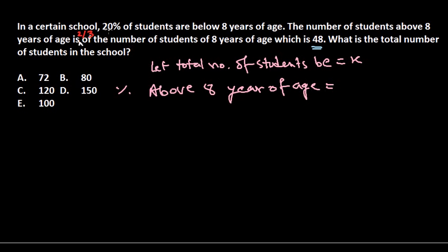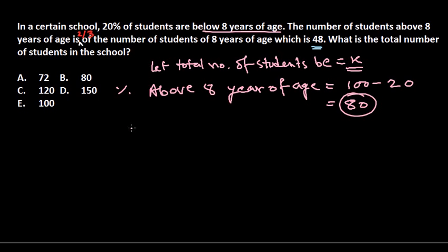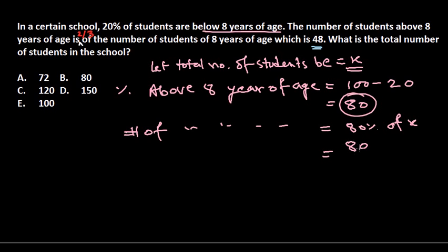Since 20% of students are below eight years of age, the percentage of students above eight years of age will be 100 minus 20, which equals 80%. So the number of students above eight years of age will be 80% of the total students x, which is 80/100 × x.